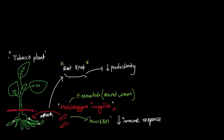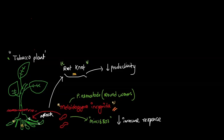So we have this tobacco plant, and in this tobacco plant there is this disease called root knot disease. This disease is caused by this particular pathogen — a parasite named Meloidogyne incognita. It is a nematode, a roundworm. This parasite attacks the root of this tobacco plant and forms a small knot over the roots, which makes it difficult for the roots to absorb enough water and nutrients.